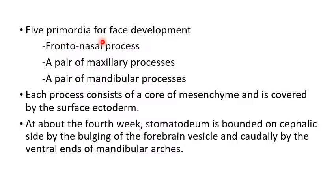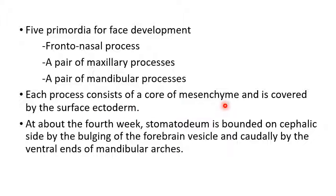There are five primordia for the development of the face: the frontonasal process, a pair of maxillary processes, and a pair of mandibular processes. Each process consists of a core of mesenchyme covered by the surface ectoderm. At about the fourth week, the stomodium is bounded on the cephalic side by the bulging of the forebrain vesicles and caudally by the ventral ends of the mandibular arches.